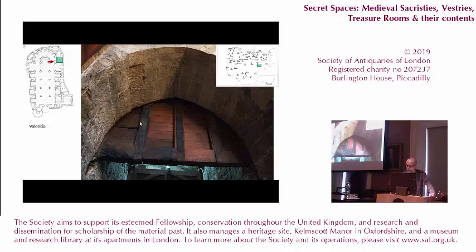The Valencian revolt of the Germanies prompted the treasury of the cathedral to be secured with a monumental door with a portcullis, much like the fortified entrance to the city, which impeded access to the sacristy-treasury of the cathedral that had housed the king's collection of relics since the reign of Alfonso V of Aragon, who died in 1458. Between the 15th and the 16th century, the concept of the sacristy as an independent space persists in both newly constructed buildings as well as remodeled ones.